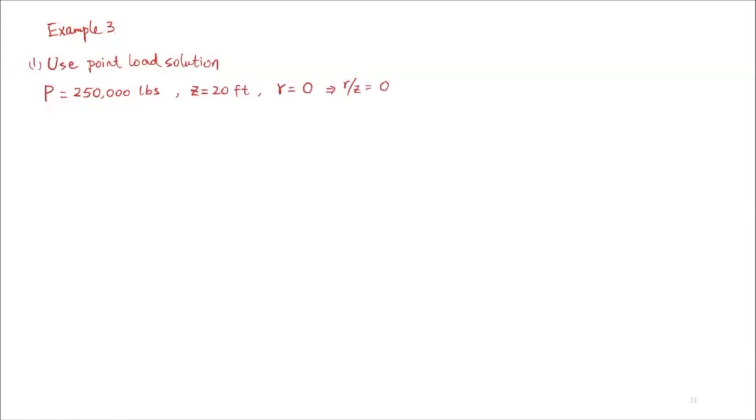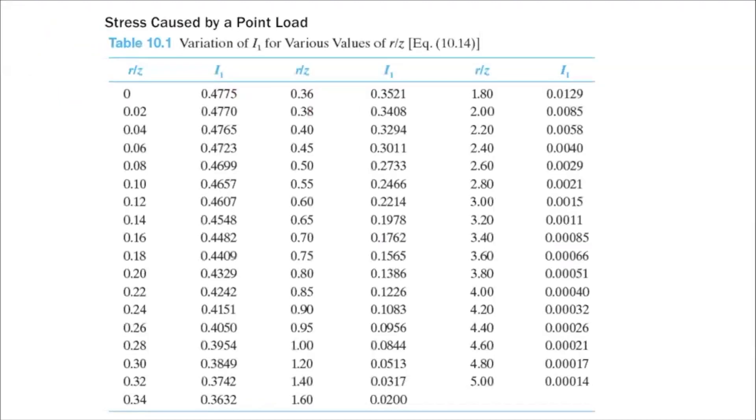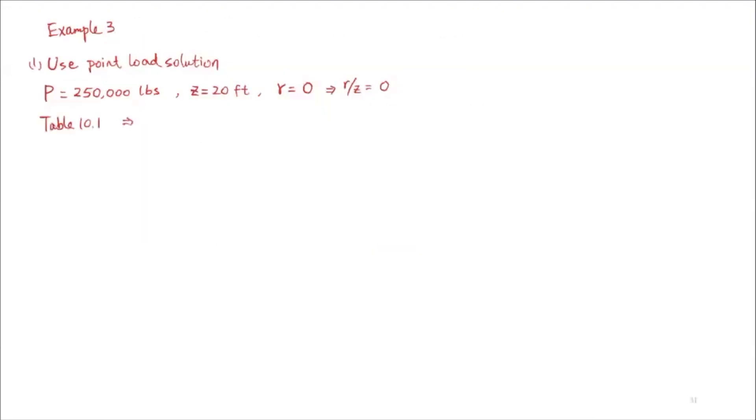For the point load, we use Table 10.1 with our R/Z value of 0. Looking at Table 10.1, the influence factor I1 for point load with R/Z equals 0 corresponds to an I1 value of 0.4775.